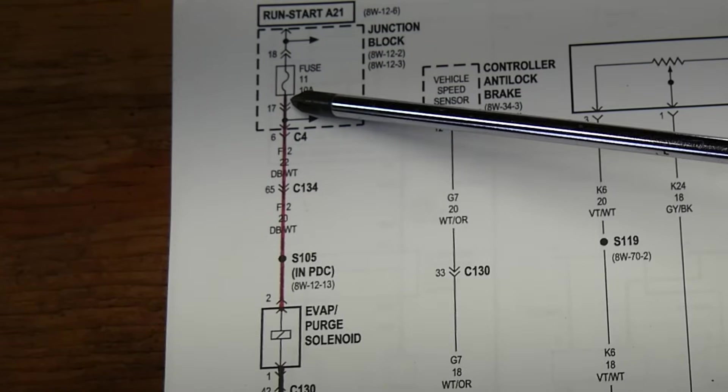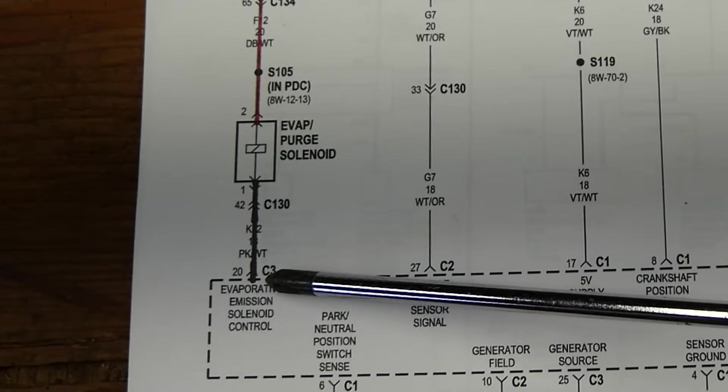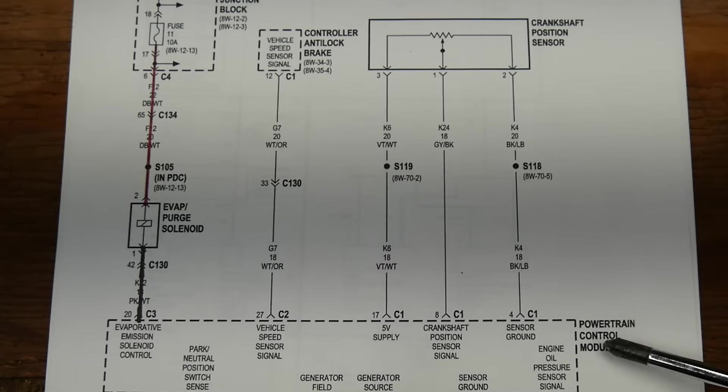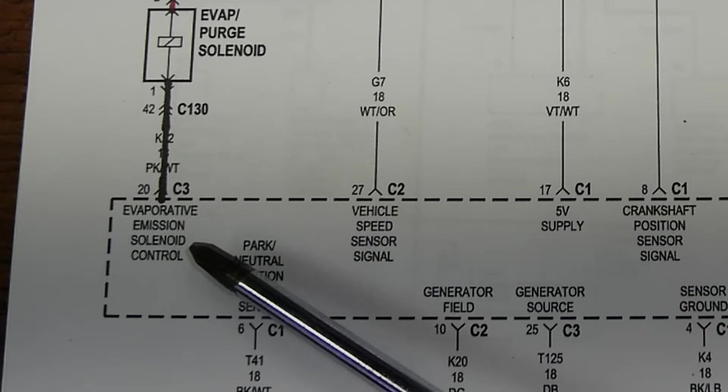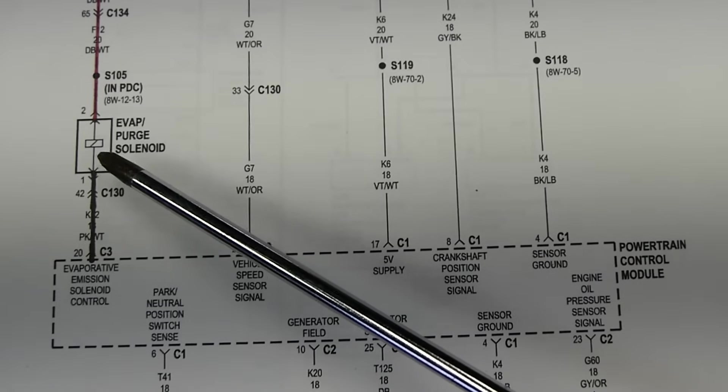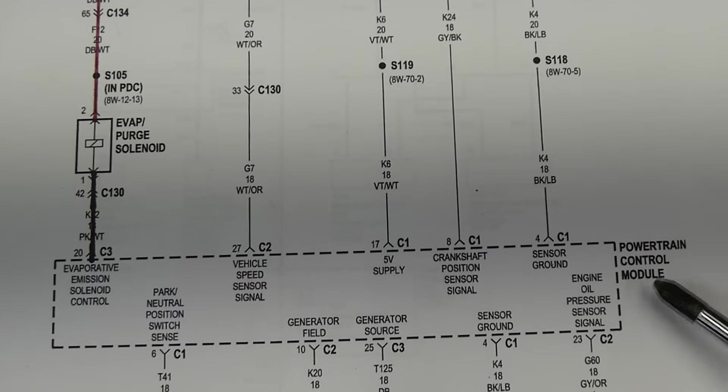So here's what it will look like. So you get your power side, you get your load and then you get your negative or the ground side which goes to your power control module. And if you read here it says evaporative emission solenoid control which means that this solenoid is ground side controlled by your car's power control module.